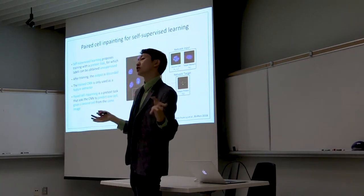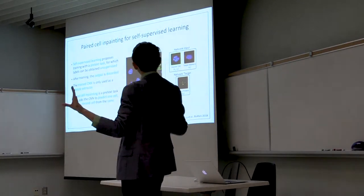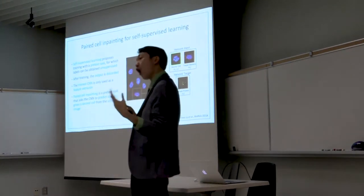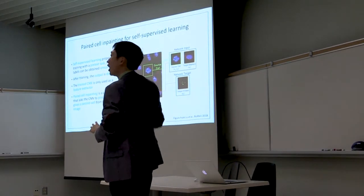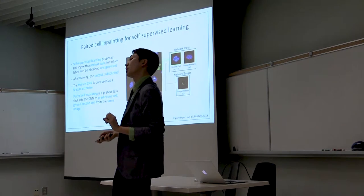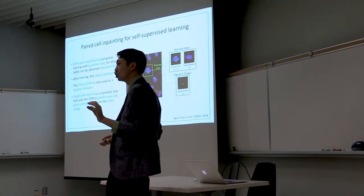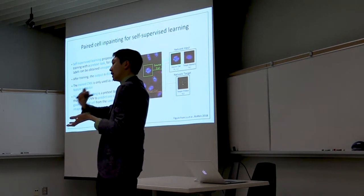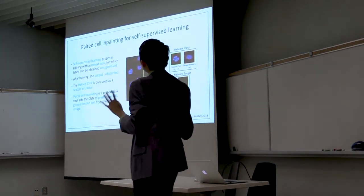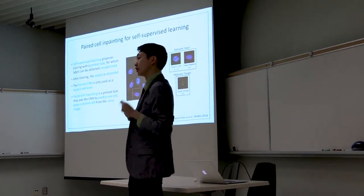And then we'll ask the neural network to predict what it thinks the protein looks like in the second cell. Now, why do we expect this to learn good features? I think this is best explained from human intuition. If I were to show you guys these two images, you'd probably be able to do this task. The way you would go about it is that you would look at this image and you'd think, this protein is localizing to the nucleus. I know because there's a bunch of bright dots in this image. And then you would know to paint a bunch of bright dots within the nucleus of the second image, right? So we think that the CNN will have to solve similar logic in order to solve this problem.